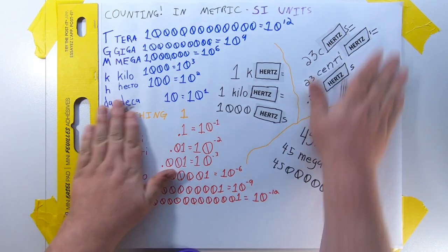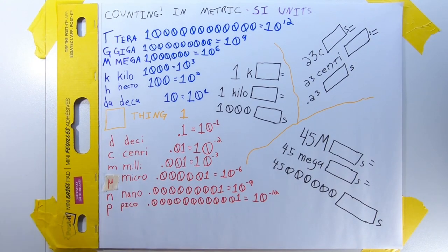Seriously, it could be anything. One kilocat is 1,000 cats. Twenty-three centicats is 0.23 cats, and everyone is mad at you. Forty-five megacats is 45 million cats, and you now need the world's biggest litter box. And that is how we count in science.